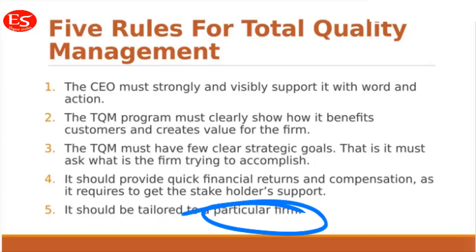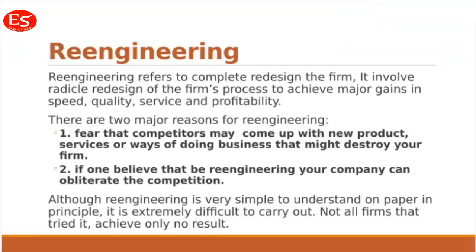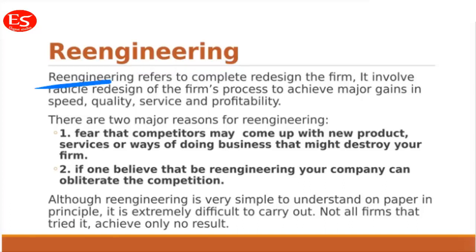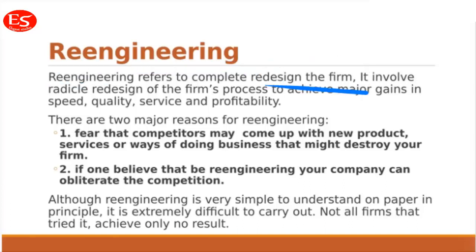The fifth rule is that TQM should be tailored to a particular firm. Total quality management should not be the same for all companies — it should be adapted according to the company's environment and objectives.